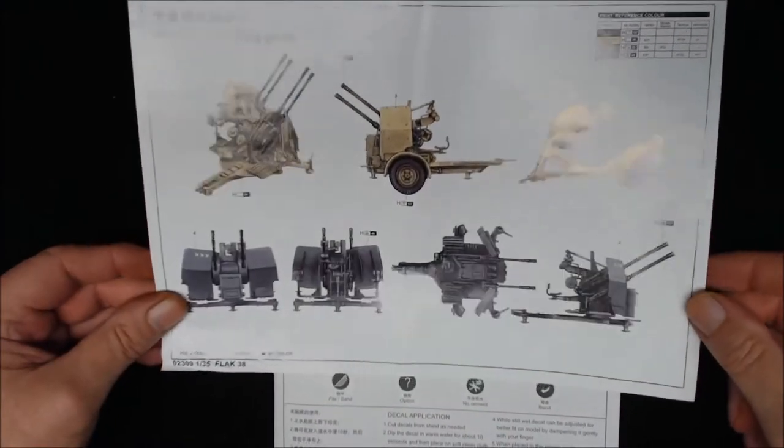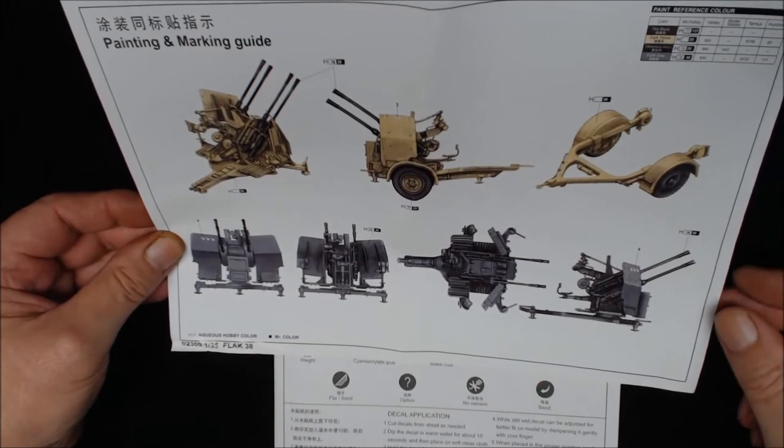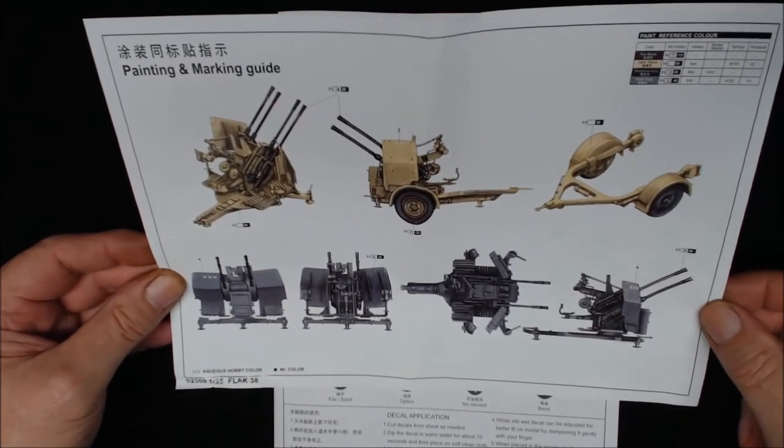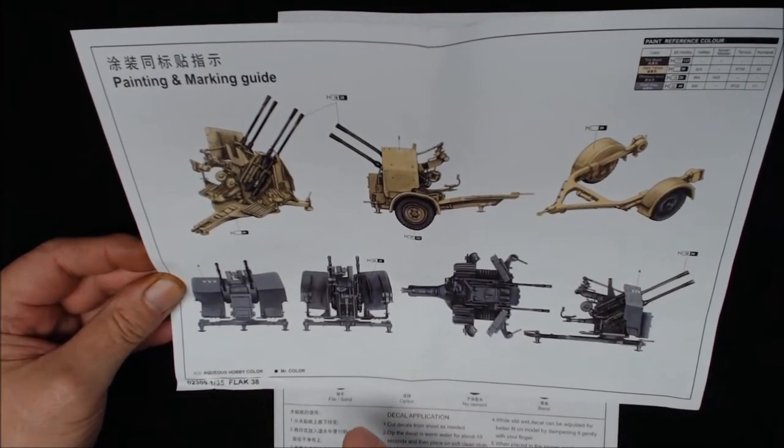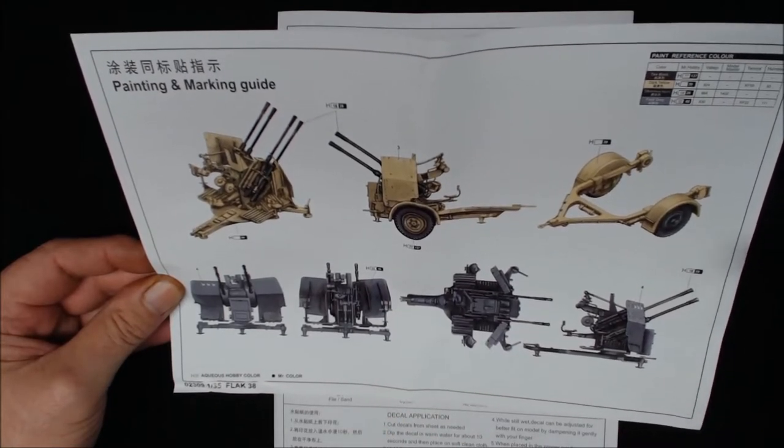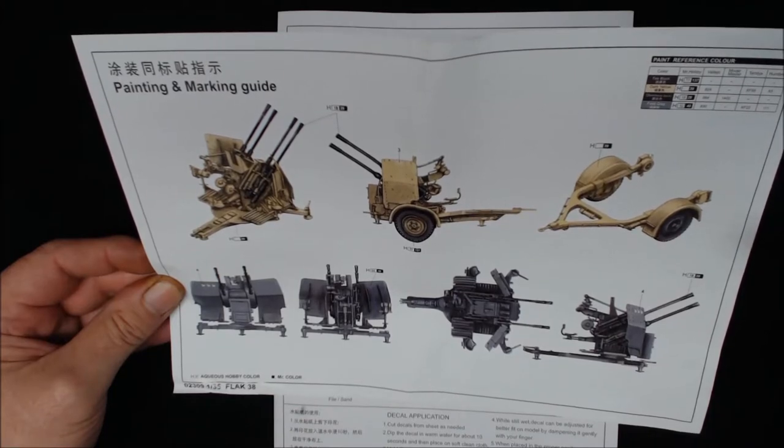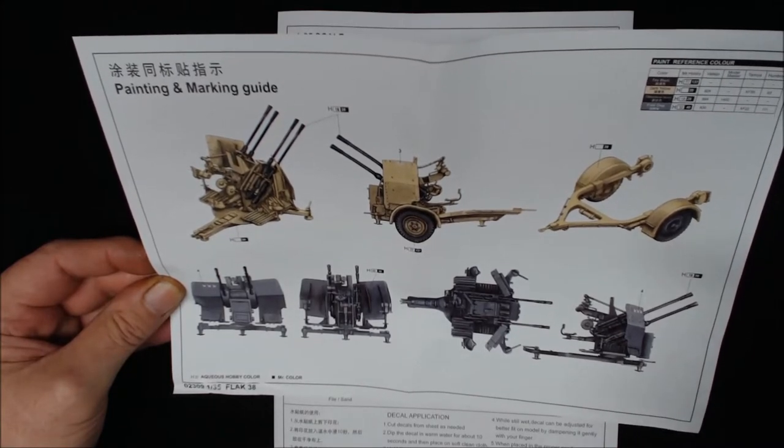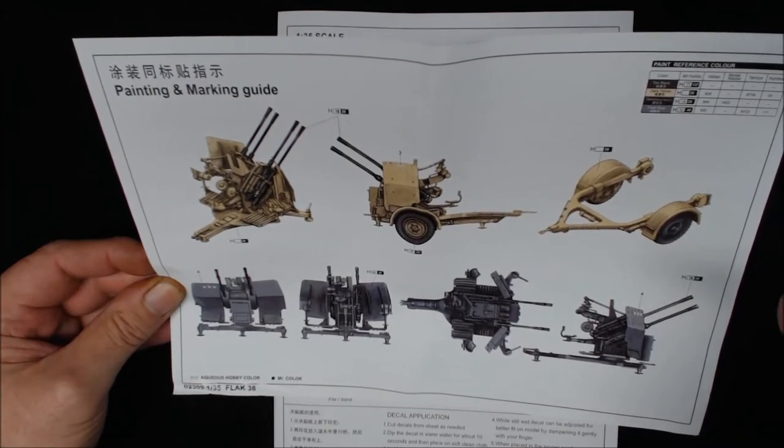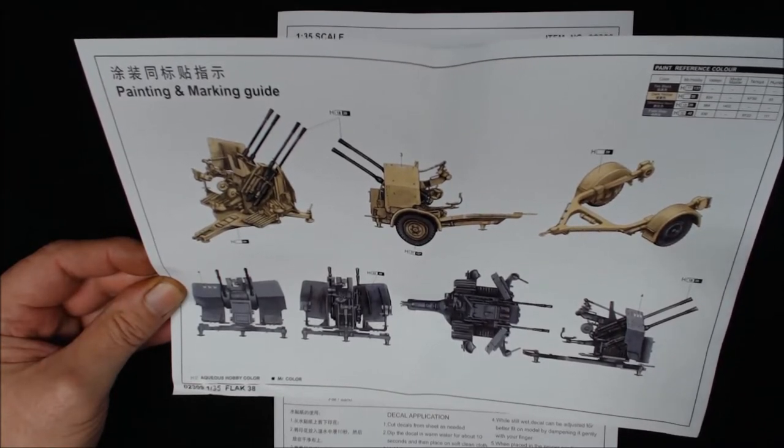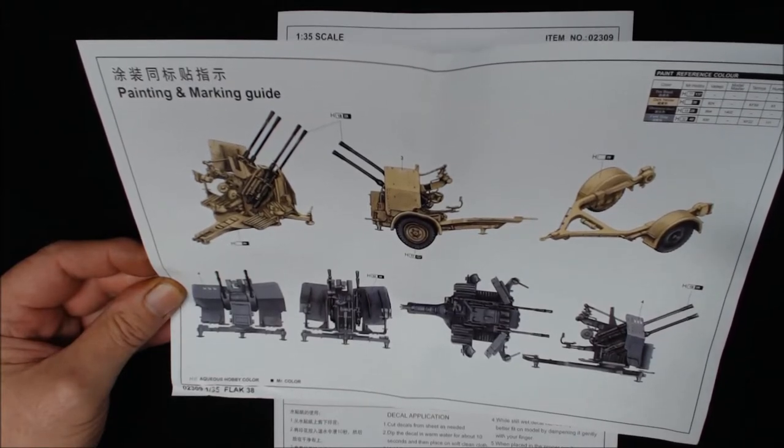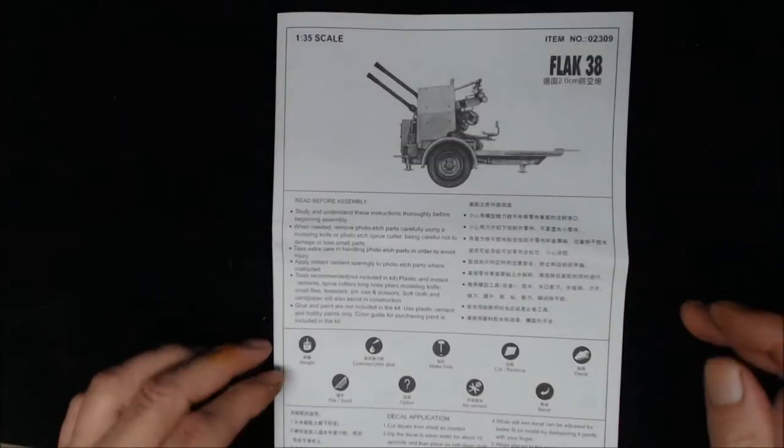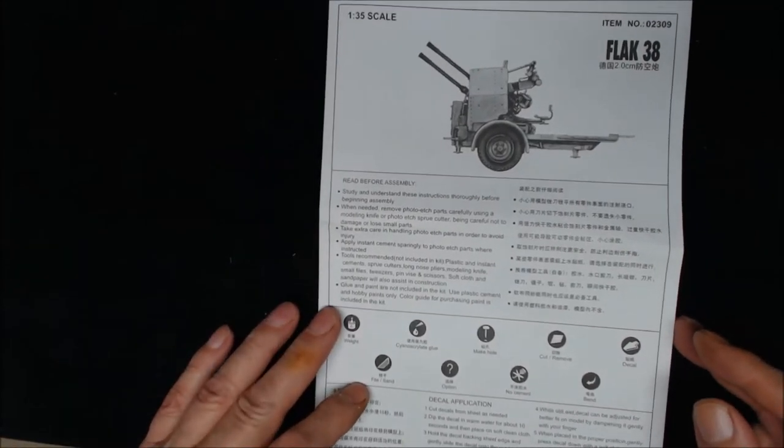We'll start with the painting and marking guide. We've got one in sand and the other in standard German grey. Colour call out - we've got colour callouts for Mr. Hobby, Vallejo, Model Master, Tamiya and Humbrol. You've got all the colours for Mr. Hobby, Vallejo you've only got three, Model Master you've only got one, Tamiya you've got two and Humbrol you've got two. So you'll have to mix and match and make your own mind up.